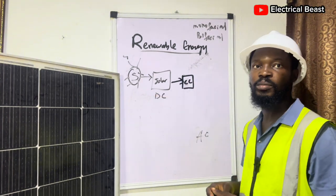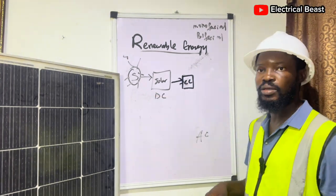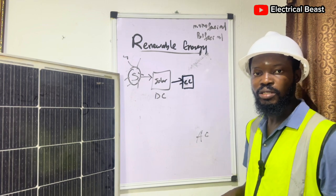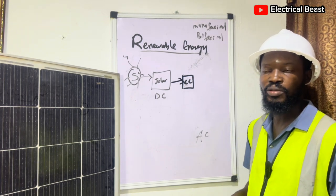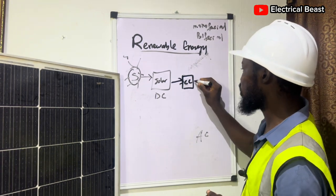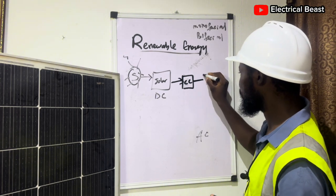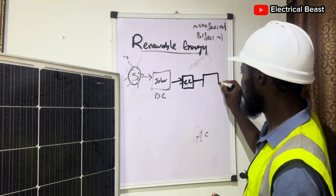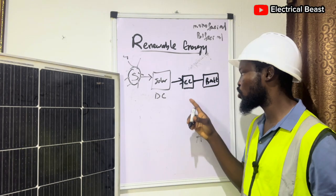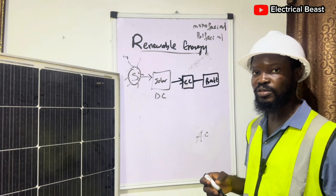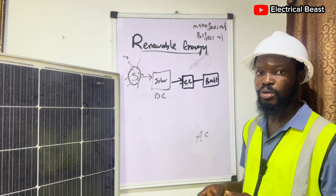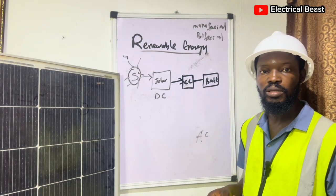The charge controller is very important because it regulates the charging and discharging of the batteries. From the solar charge controller we have the battery. For charge controllers we have different types: we have PWM solar charge controller and we also have MPPT.